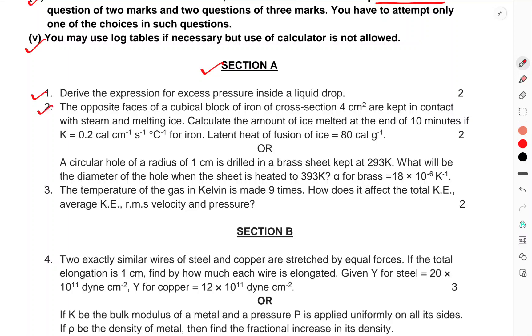The opposite faces of a cubical block of iron of cross sectional 4 cm² are kept in contact with steam and melting ice. Calculate the amount of ice melted at the end of 10 minutes if K = 0.2 kcal per cm per second per Celsius. For iron, latent heat of fusion is 80 kcal per gram.